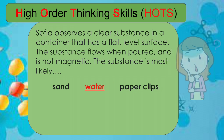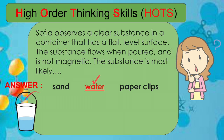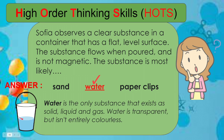The answer is water. Water is the only substance that exists as solid, liquid, and gas. It is transparent but essentially colorless. Water will always form a flat level surface unless acted on by another force. The substance flows when poured because the particles are close together but not as close as in solids — they are still able to move around, which causes the liquid to flow. And water is almost completely non-magnetic, meaning it has no power to attract.